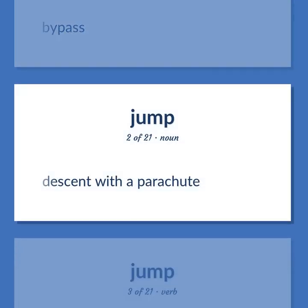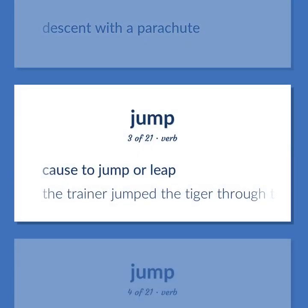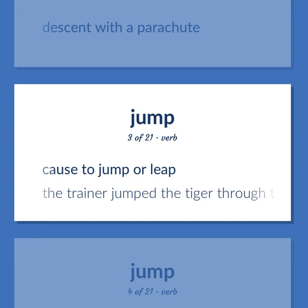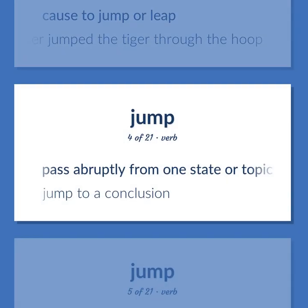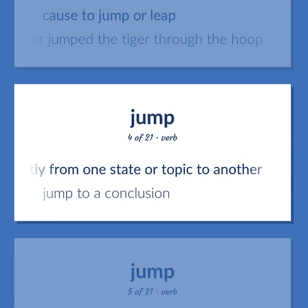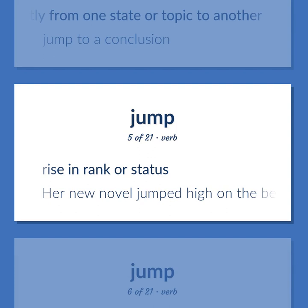Jump: Descent with a parachute. Cause to jump or leap — 'The trainer jumped the tiger through the hoop.' Pass abruptly from one state or topic to another — 'Jump to a conclusion.' Rise in rank or status — 'Her new novel jumped high on the bestseller list.'